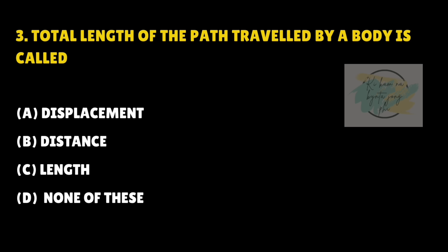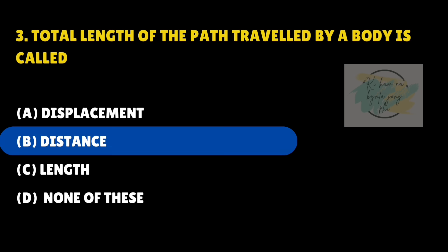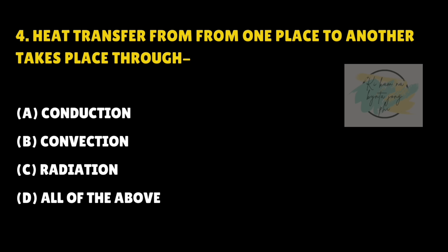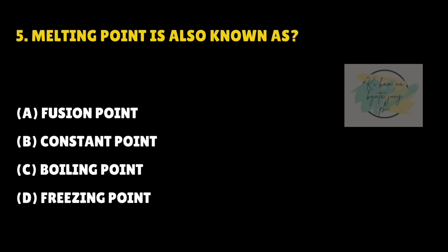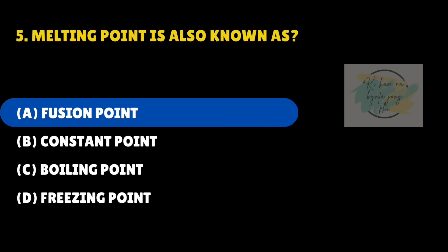The total length of the path traveled by a body is called — answer is B — Distance. Heat transfer from one place to another takes place through — answer is D — All of the above. Melting point is also known as — answer is A — Fusion point.